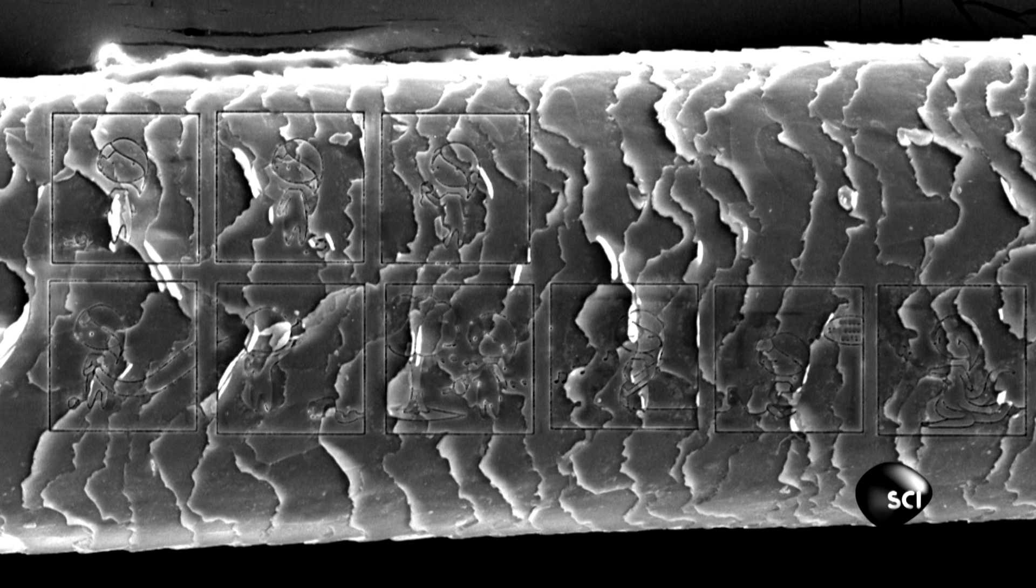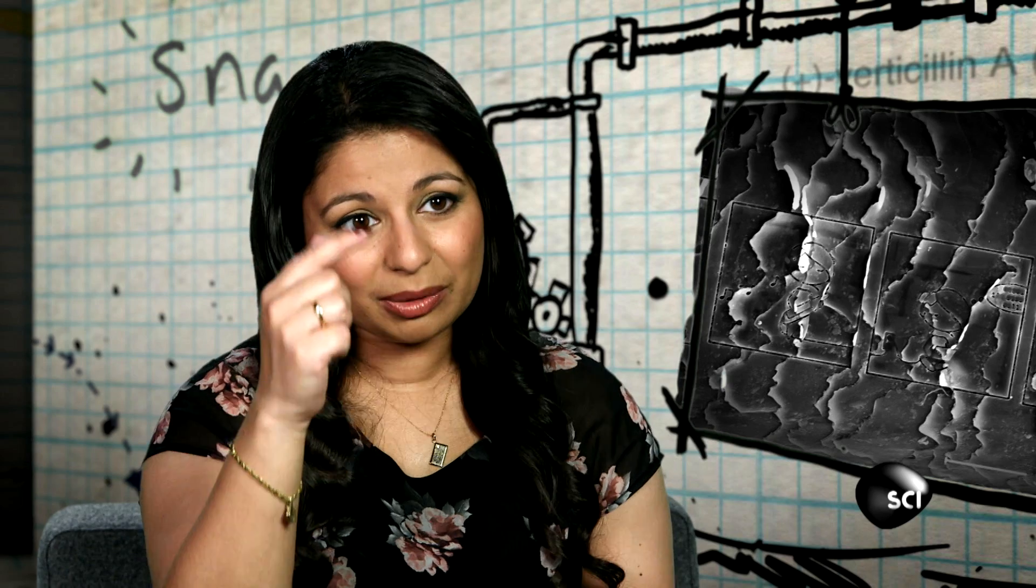Now this doesn't work like a normal pen would work because it doesn't deposit. In fact what it does is a stream of charged particles are able to obliterate the surface of the hair, creating an etched effect. It's a little bit like firing atom-sized bullets out of a really tiny gun.